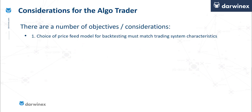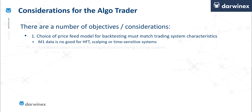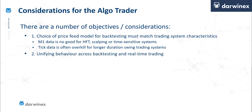There are a number of considerations that every algo trader has to make a decision around. The first is the choice of price feed model for backtesting, and of course this must match the trading system characteristics that are being tested. For example, the use of M1 data is no good for any system that's approaching a high frequency trading model or a scalping time-sensitive or price-sensitive system. Tick data would obviously be the right choice for these types of systems. However, tick data is often overkill for longer duration systems such as swing trading systems.